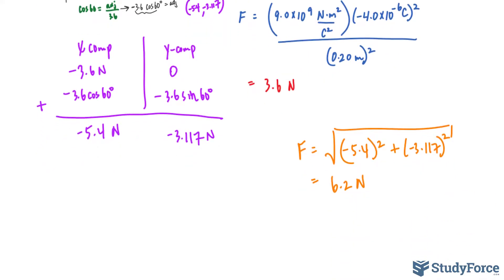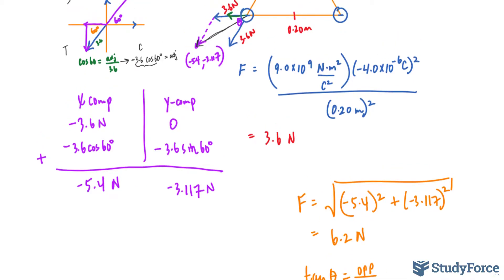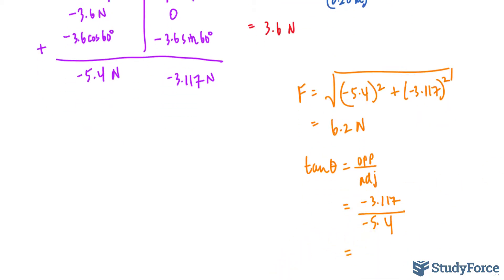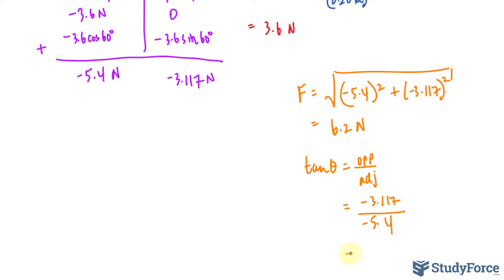And we will use the trigonometric function tangent. Tangent theta is equal to the opposite over adjacent. The opposite is negative 3.117 over the adjacent is negative 5.4. Two negatives make a positive. So we have tangent inverse of 3.117 divided by 5.4 and we get 30 degrees around that.